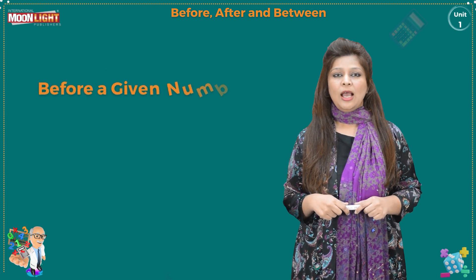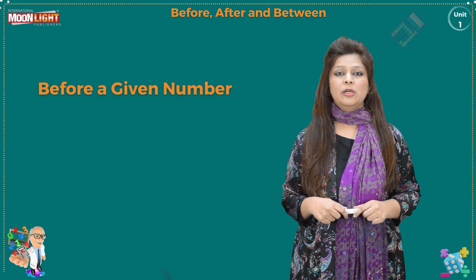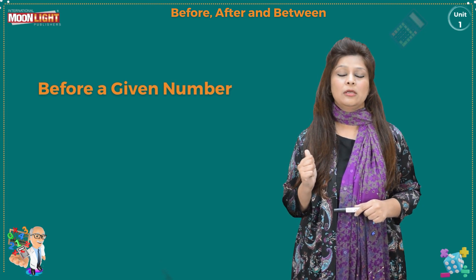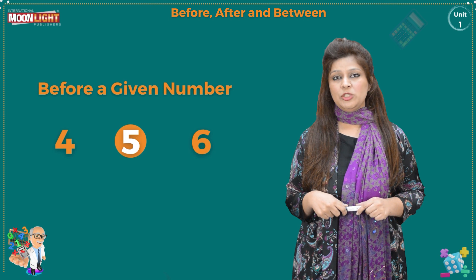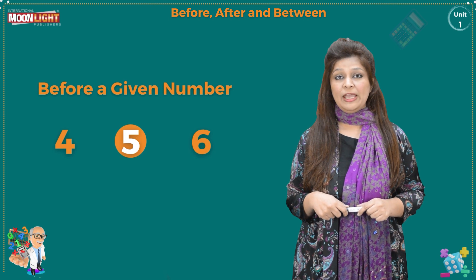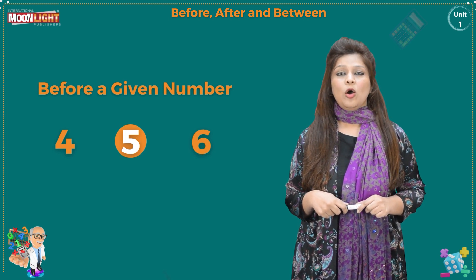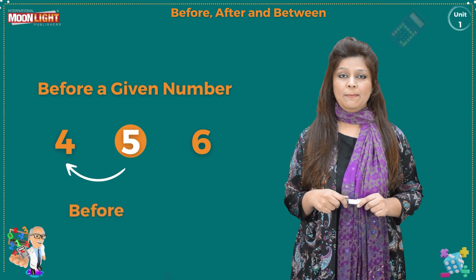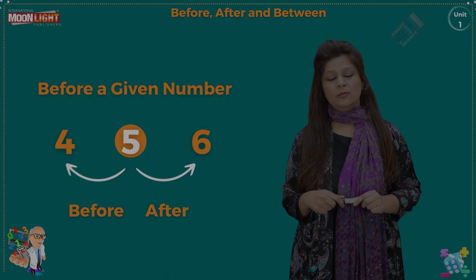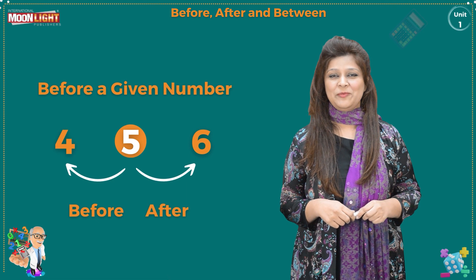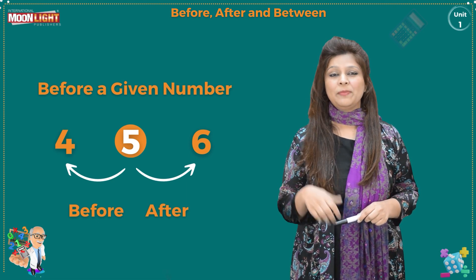Next, I will tell you how to find a number before a given number. For example, when you check the position of the number 5, you will get the easy idea of which number will come before and which number will come after. Yes, 4 will come before 5. Good job!